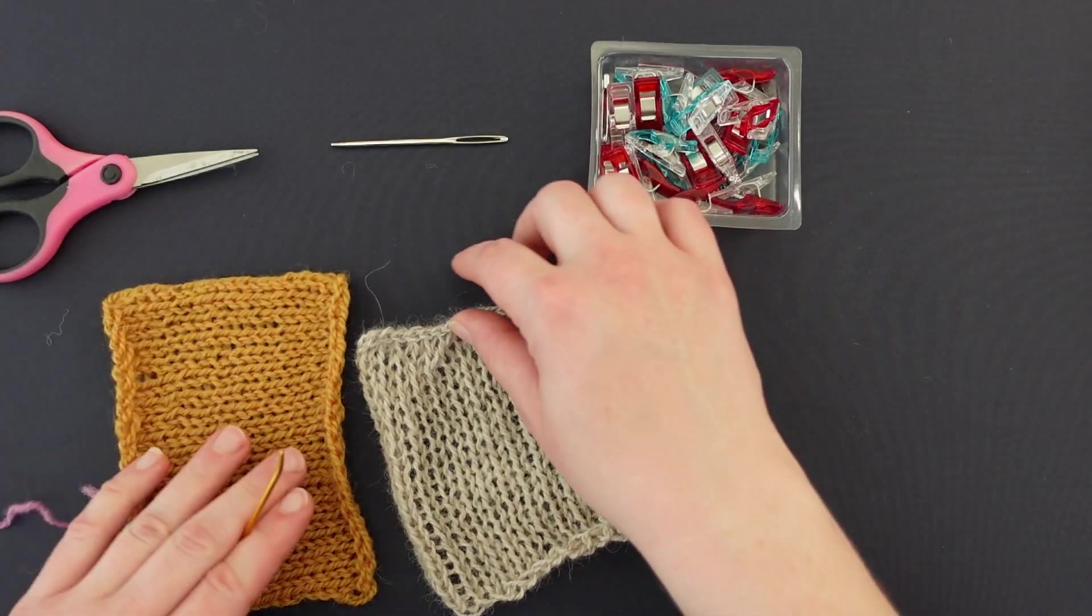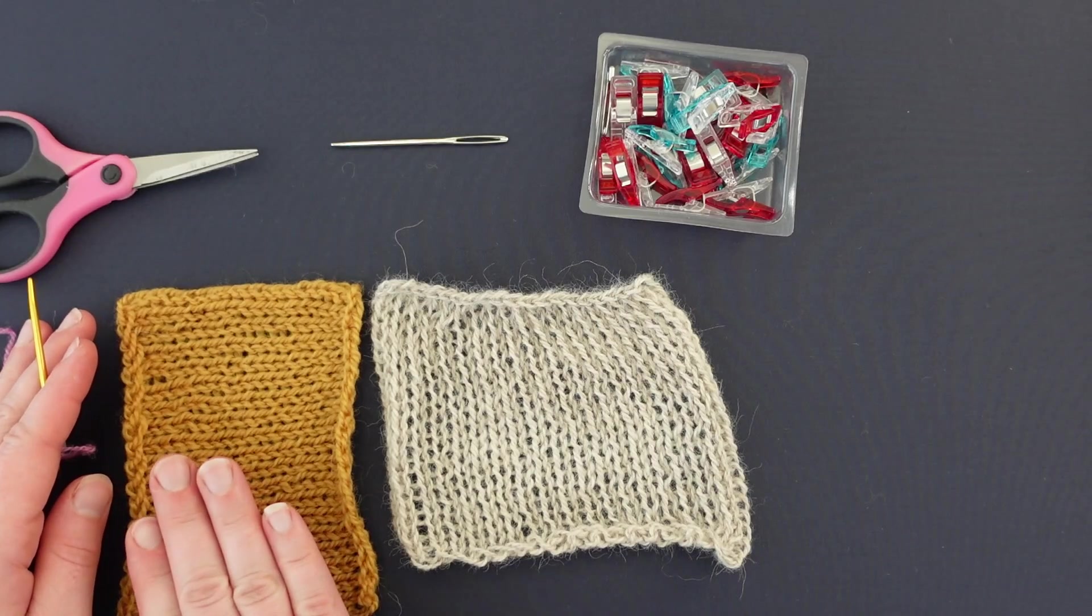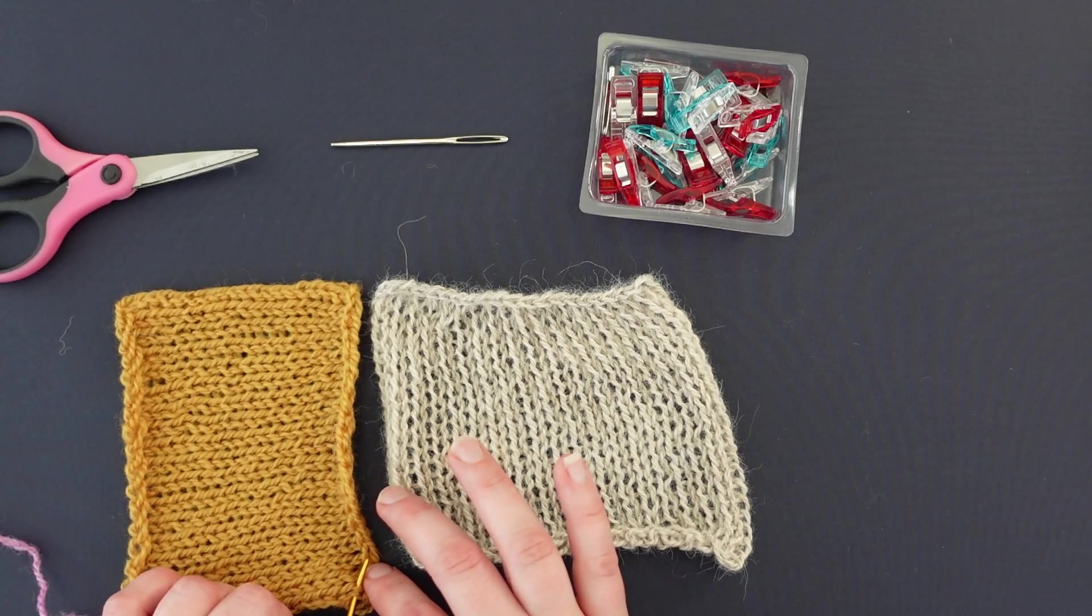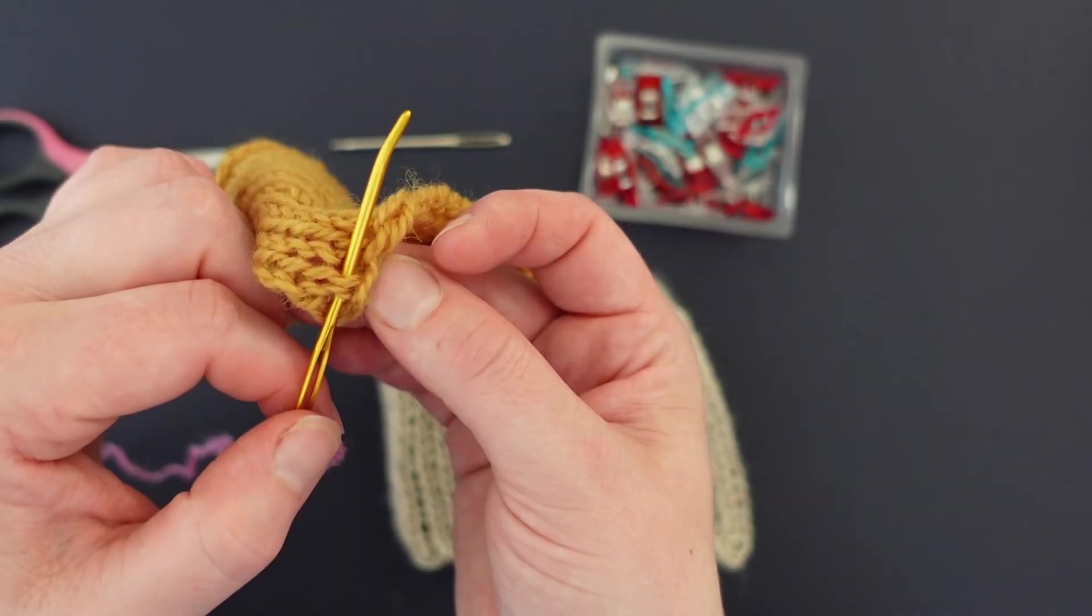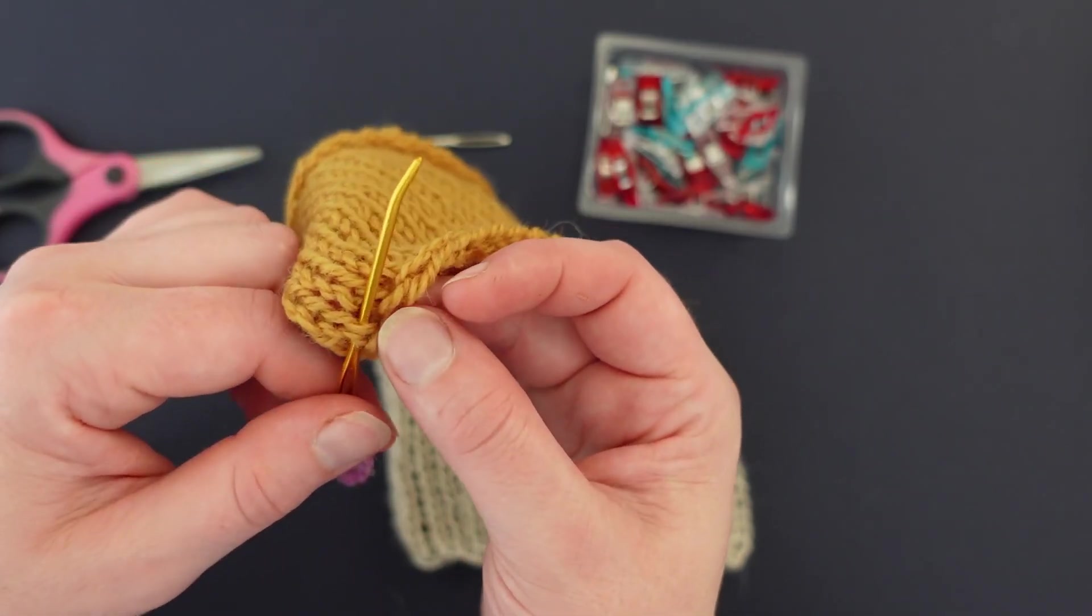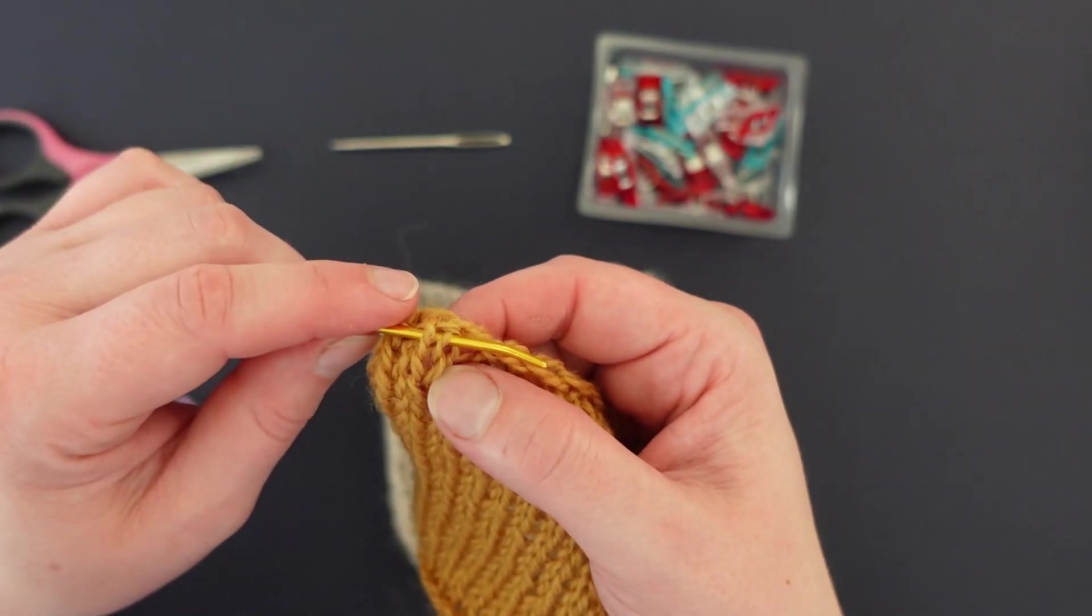In this example I have two swatches. They are both 20 stitches wide by 20 rows high and so I'm going to be picking up a whole stitch just under the cast-off edge. You could also do this with the cast-on edge. It just depends on how your pattern is written. This is the cast-on edge.